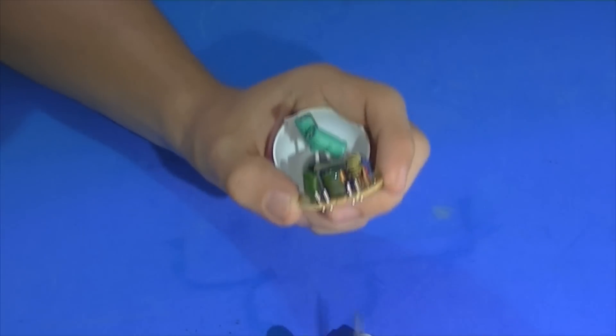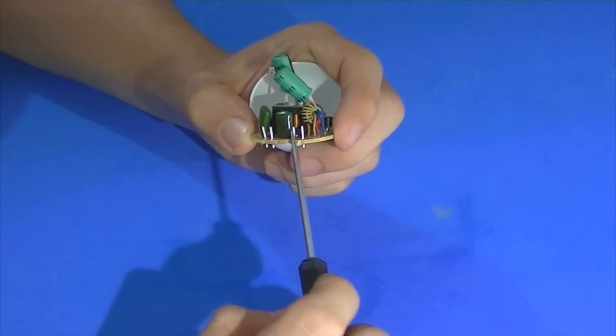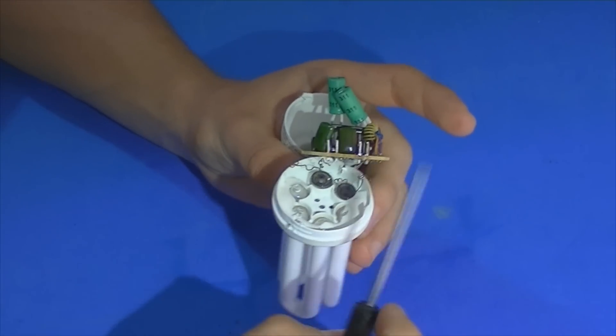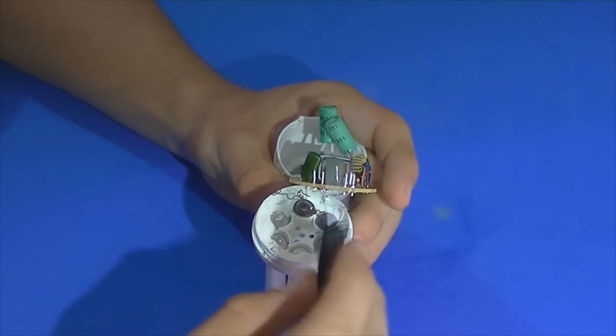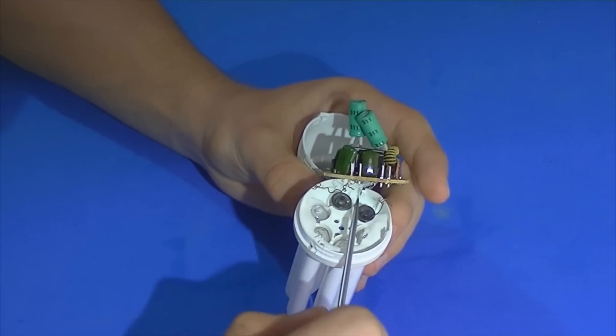Bom, esses pedacinhos vêm enrolados, cada um em um pino desses aqui. 1, 2, 3, 4. Beleza? Eu já retirei. É bem simples, basta você ir desenrolando ele. Ele nem é soldado, ou você pode cortar com uma tesoura. Beleza?